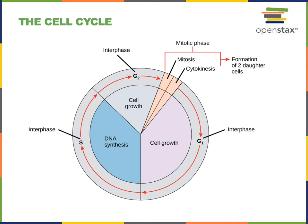Cell division is necessary for reproduction. Cell division called meiotic cell division, which involves two rounds of cell division, will produce unique daughter cells that have a unique set of genetic instructions. These are the sperm cell and ovum that will then unite in the process of fertilization to produce a zygote that will develop into an embryo and then a fetus.